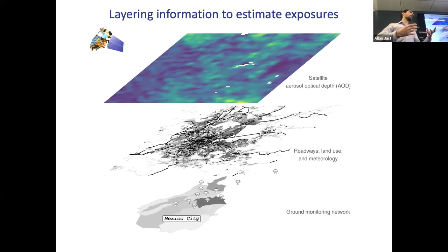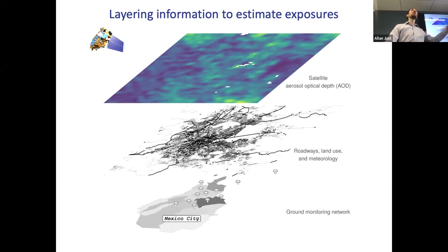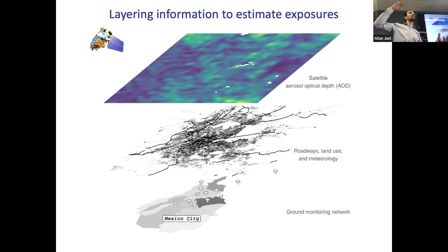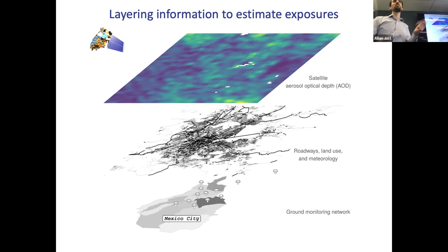A typical polar orbiting satellite might go overhead every day, giving you a snapshot at that moment. There are also geostationary satellites orbiting further up — they always stay over the same longitude and can take many snapshots over the course of the day. We'll talk about a pretty cool set of geostationary satellites.